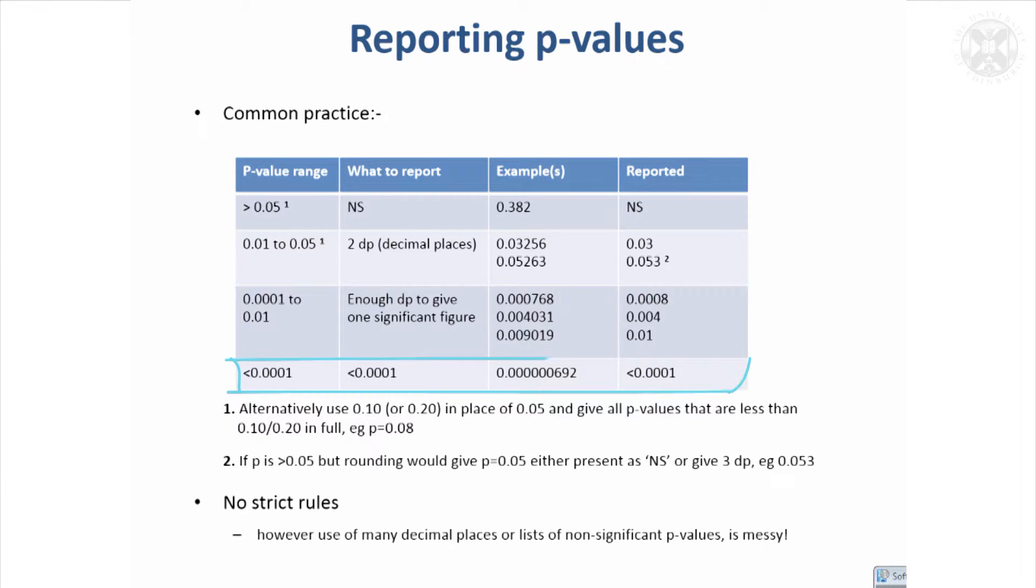For very highly significant results, I never like saying the value is exactly 0, because it's never exactly 0. Say it's smaller than a very small value, and typically people don't go much lower than 0.0001, or if you do, give it as 10 to the minus a power.